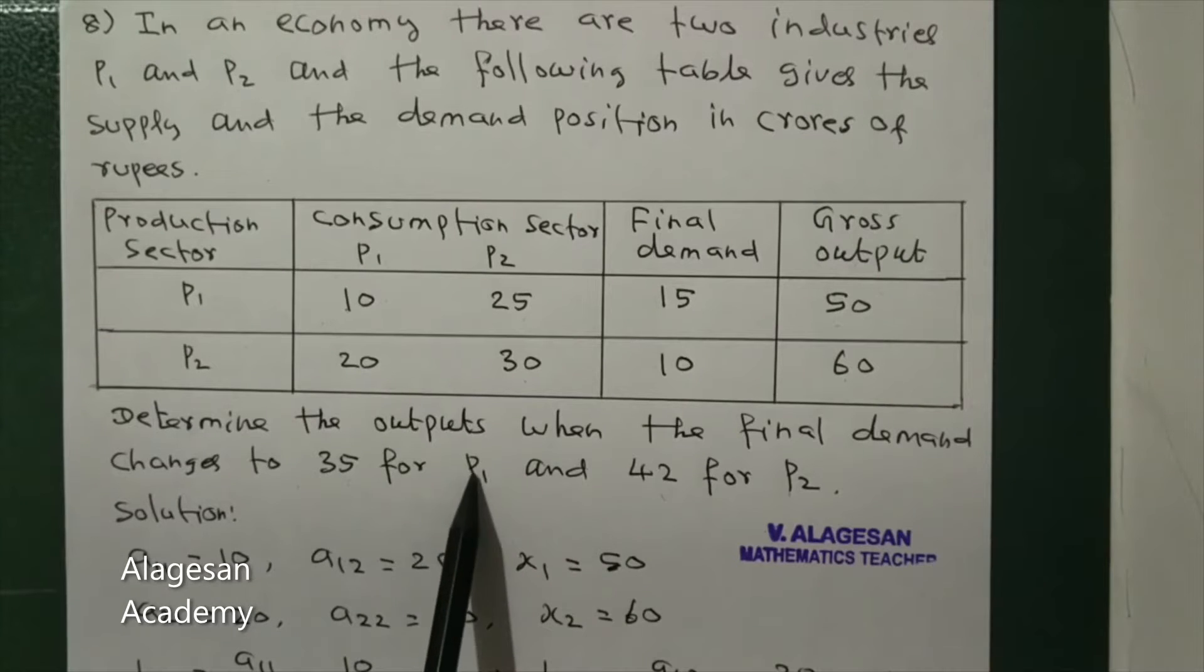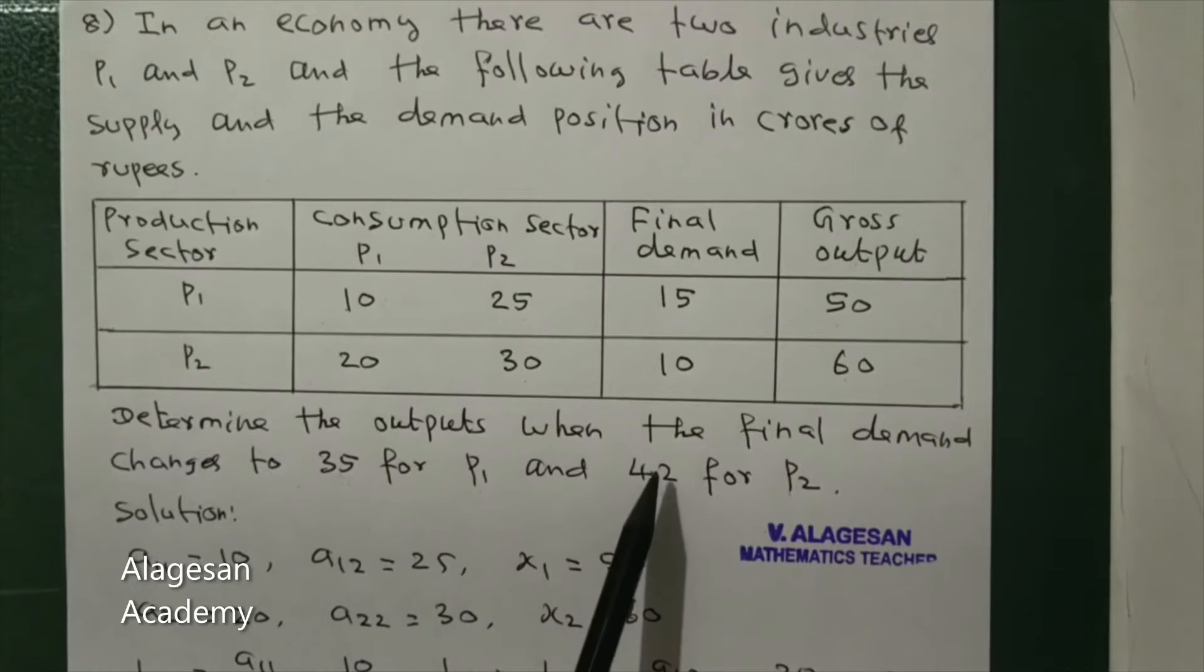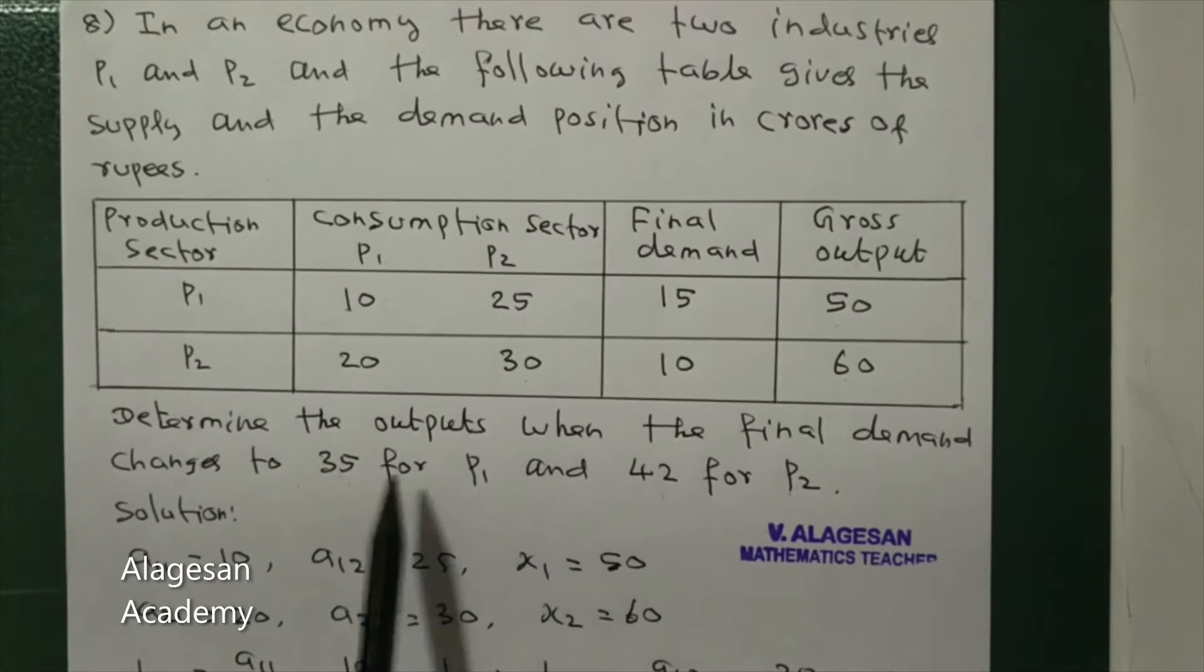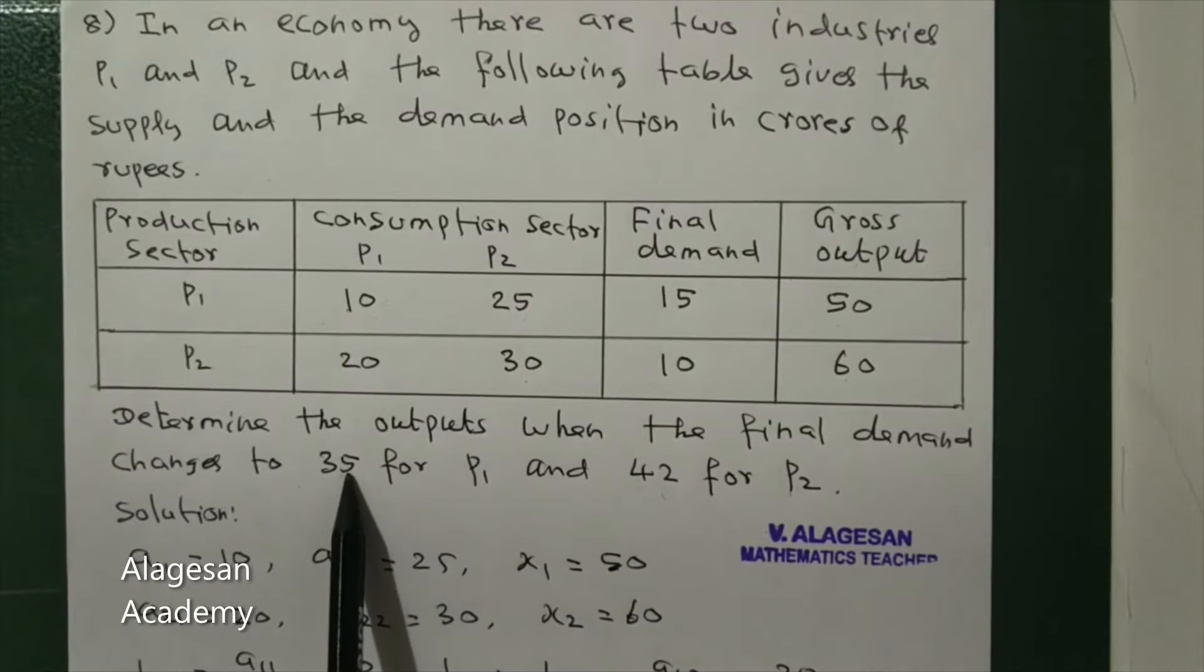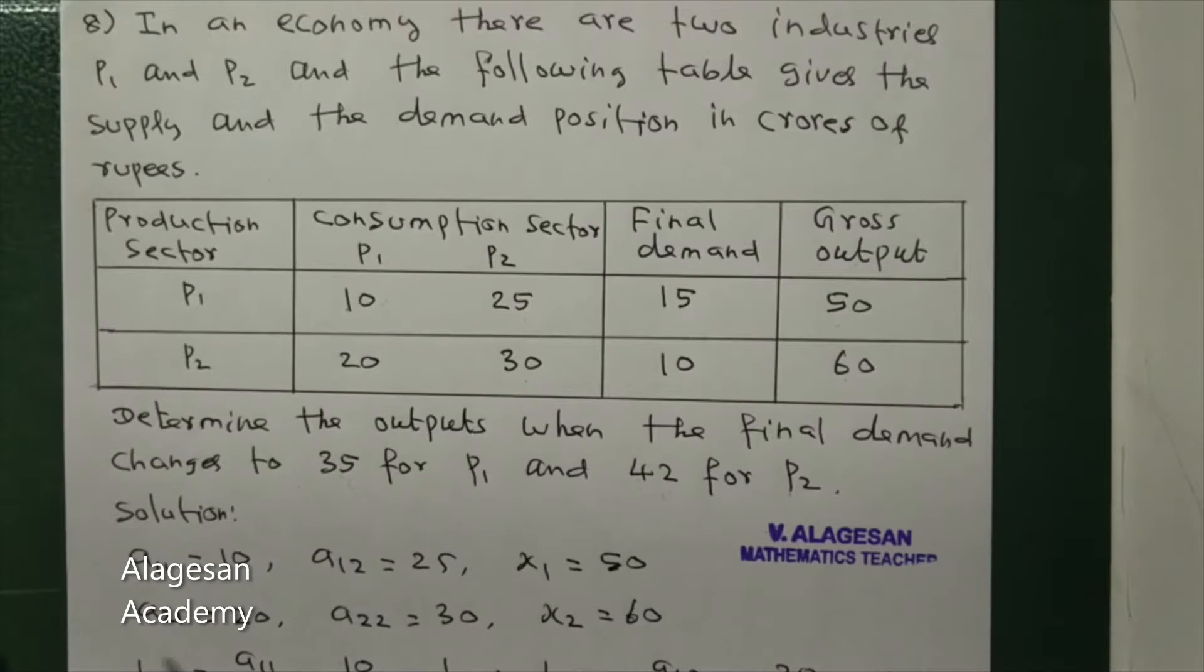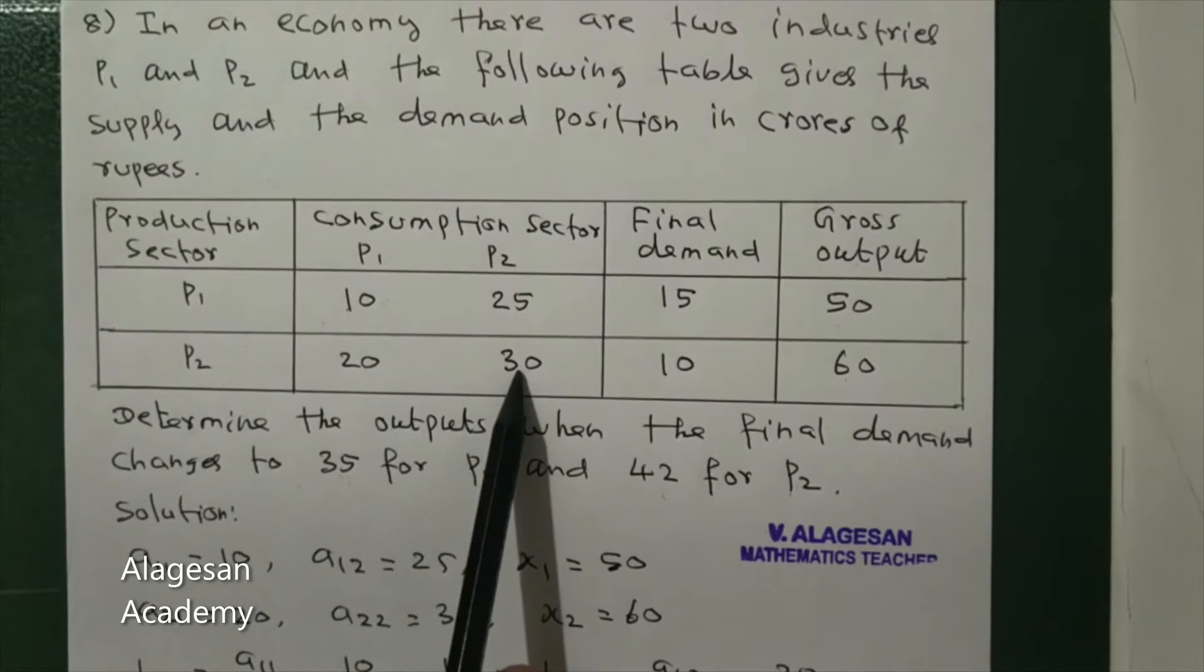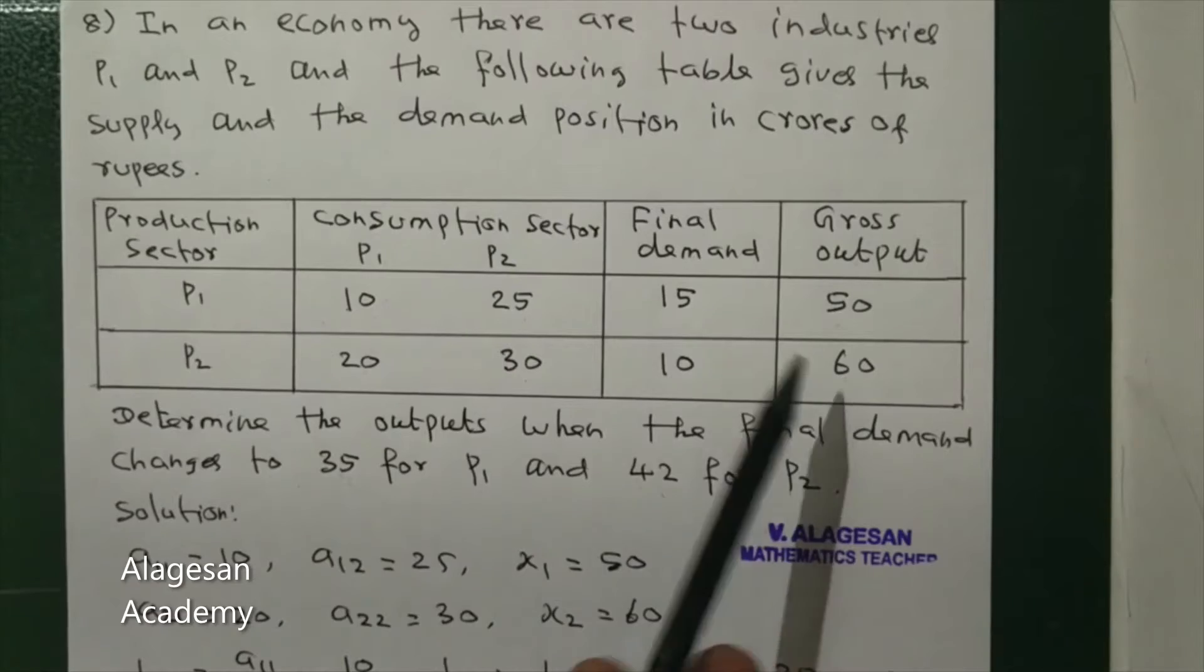For P1 and 42 for P2, so 35, 42. This is a11, a12, a21, a22, x1, x2, okay.